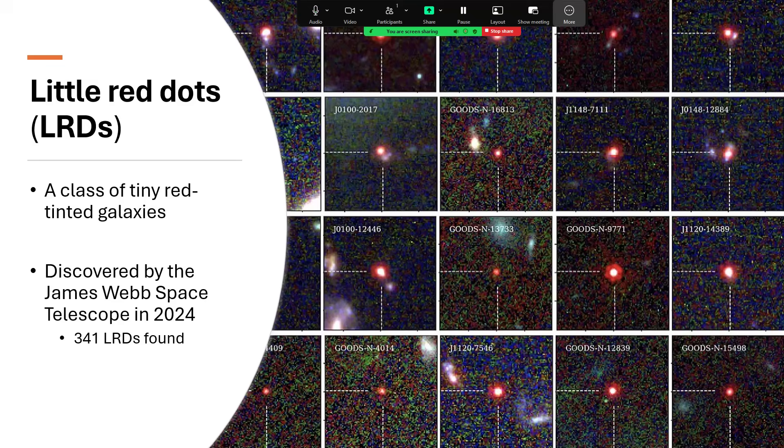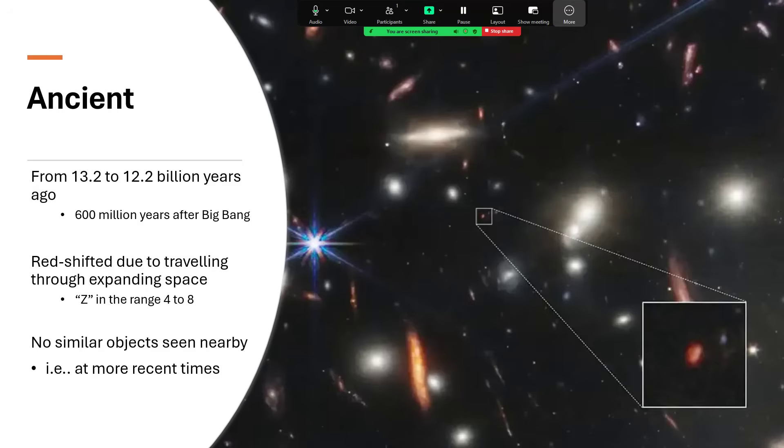These are very distant objects indeed. We're talking about small galaxies that were formed some 600 million years after the Big Bang, so 13.2 billion years ago, in an epoch lasting around a billion years from then, so there's a range of distances, a range of ages corresponding to that.